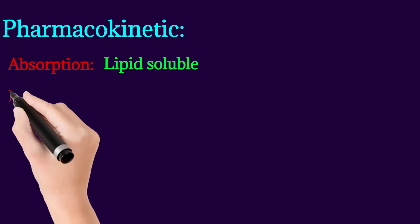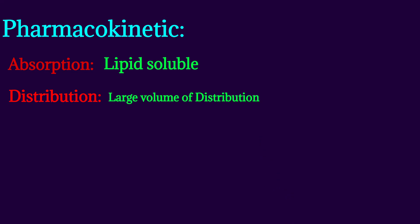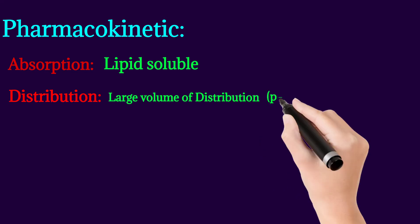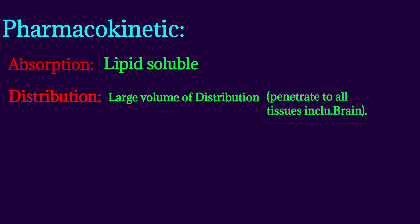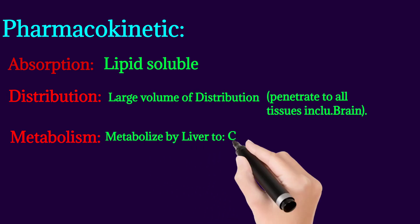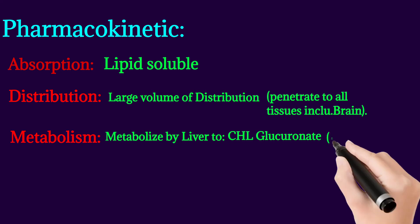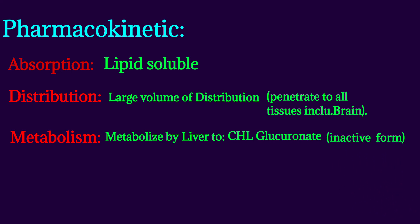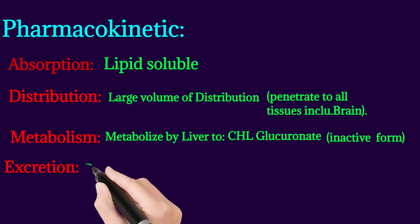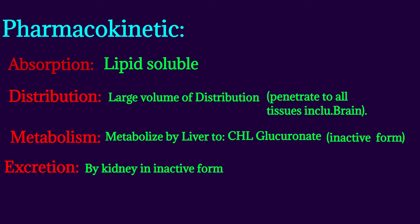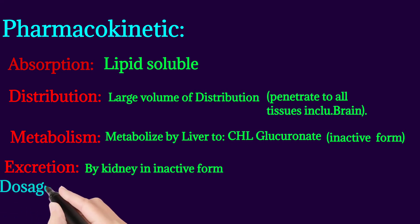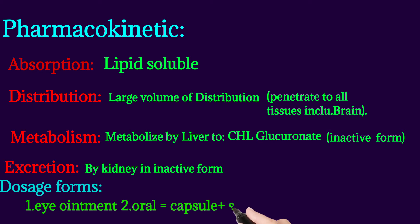For pharmacokinetics: absorption — it is lipid-soluble and can be absorbed into the blood very easily. Distribution — it has a large volume of distribution due to lipid solubility, and it can also penetrate into the brain. Metabolism — it is mainly metabolized by the liver to an inactive form called Chloramphenicol glucuronide. Excretion — it is mainly excreted by the kidney in active form as well as a small amount in inactive form.